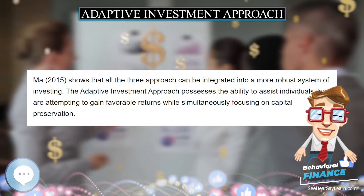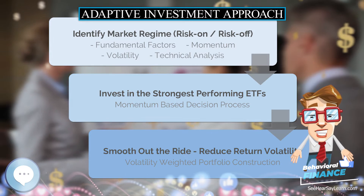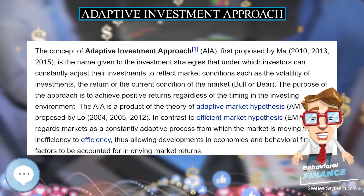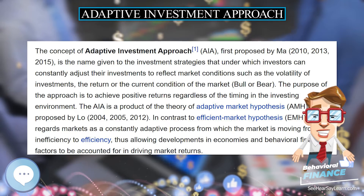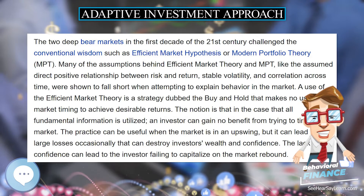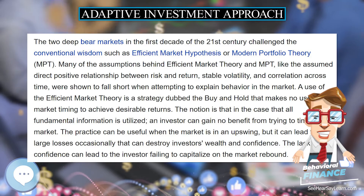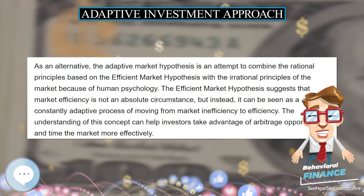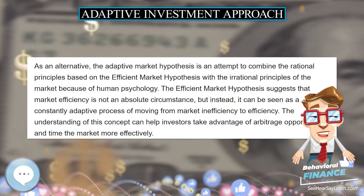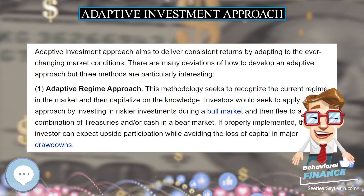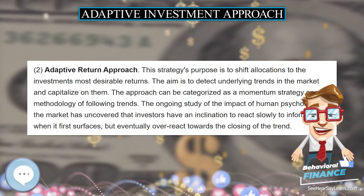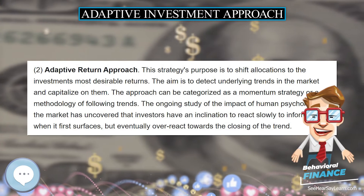As an alternative, the Adaptive Market Hypothesis attempts to combine the rational principles of the Efficient Market Hypothesis with the irrational principles of the market driven by human psychology. The EMH suggests that market efficiency is not an absolute circumstance but rather a constantly adaptive process of moving from market inefficiency to efficiency. Understanding this concept can help investors take advantage of arbitrage opportunities and time the market more effectively.